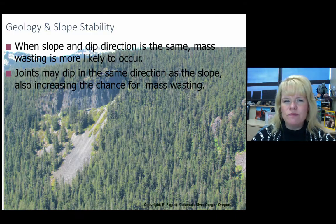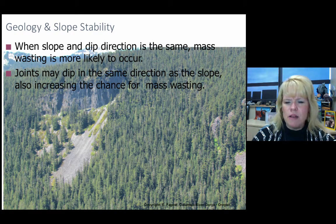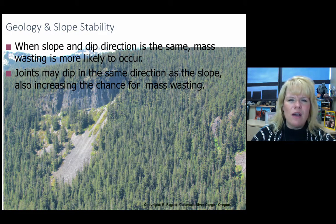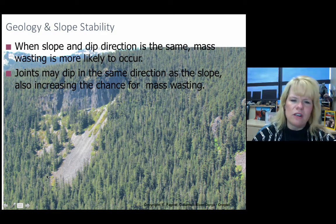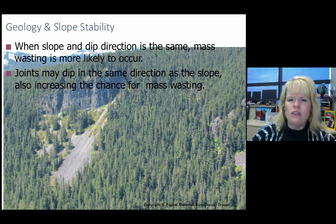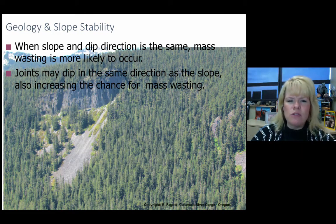Mass wasting can happen anywhere. Obviously the geology and slope composition are very important. Along the Columbia River Gorge there were a number of landslide locations — one of them had a whole big section that had landslided out. When the slope and the dip of the rock are in the same direction, you have a higher probability of material tumbling down, which is exactly what you're seeing here.